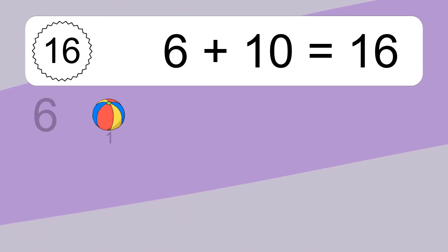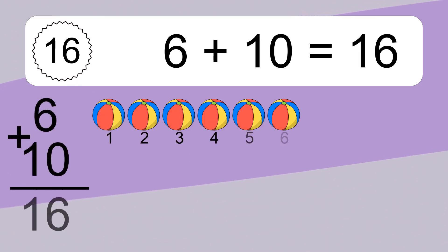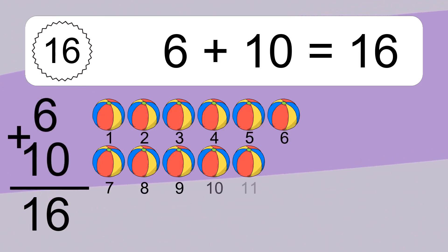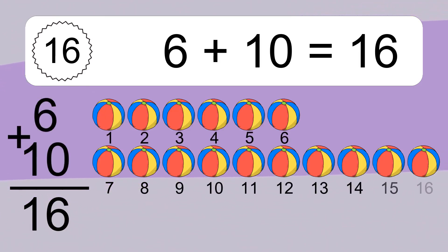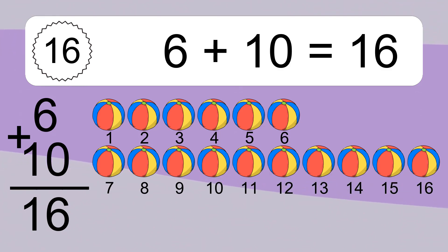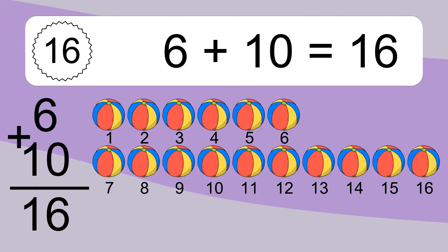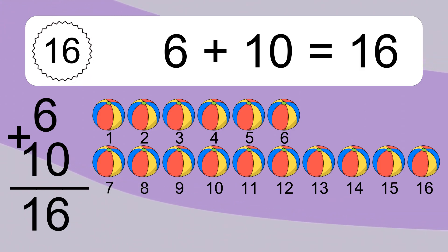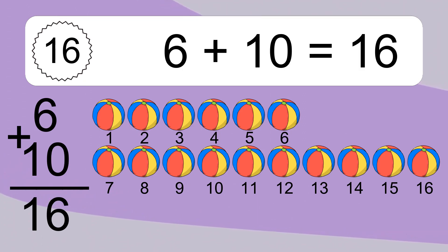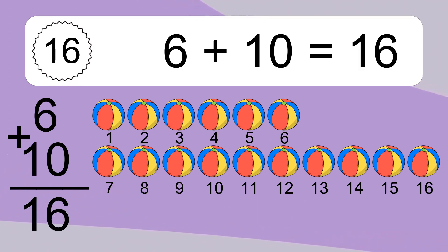6 plus 10 equals what? 6 plus 10 equals 16. Let's count it: 1, 2, 3, 4, 5, 6, 7, 8, 9, 10, 11, 12, 13, 14, 15, 16.